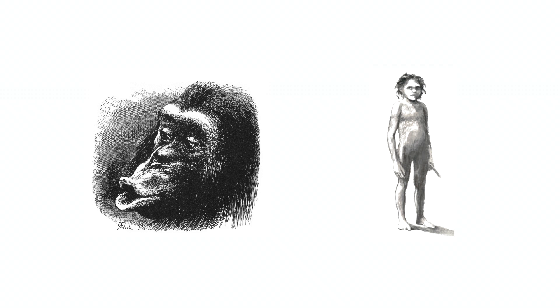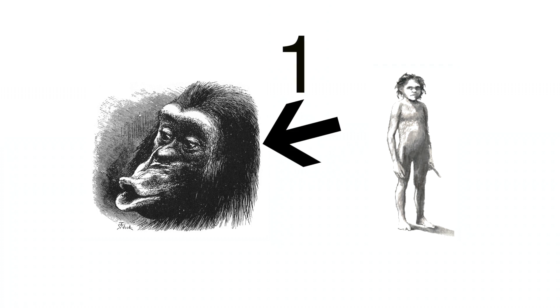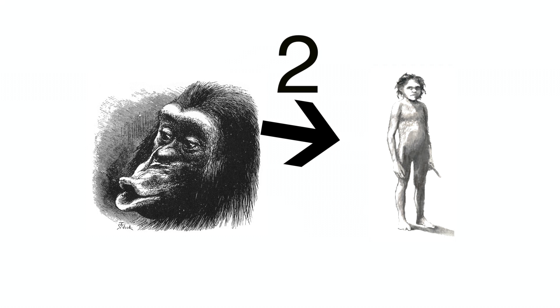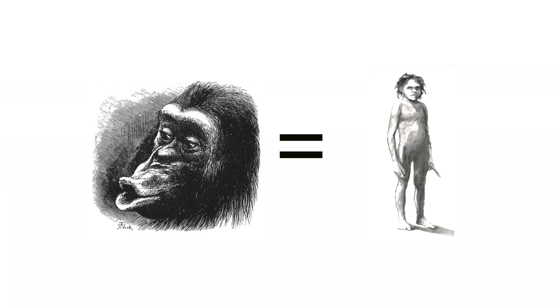Now the next step is argued over a lot, because this is where either the chimpanzee or the hominin came first. Some people think the chimp came first, and the hominin diverged from him. Others say that both diverged from the same ancestor. I personally think the second theory sounds more reasonable. The hominins are believed to have diverged around 6 million years ago, and we think the chimpanzee came around 3 million years ago, together with the bonobo.